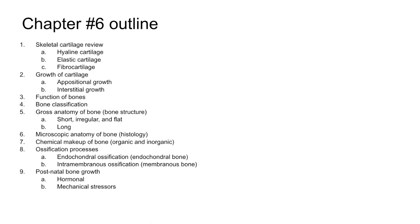We tend to focus most on long bones — those bones making up our appendages. Once we have a firm grasp on gross anatomy, we'll move to microscopic anatomy and then consider the chemical makeup of bone. In our second lecture, we'll consider the ossification processes: endochondral ossification and intramembranous ossification, followed by postnatal bone growth from birth through adolescence and into old age.